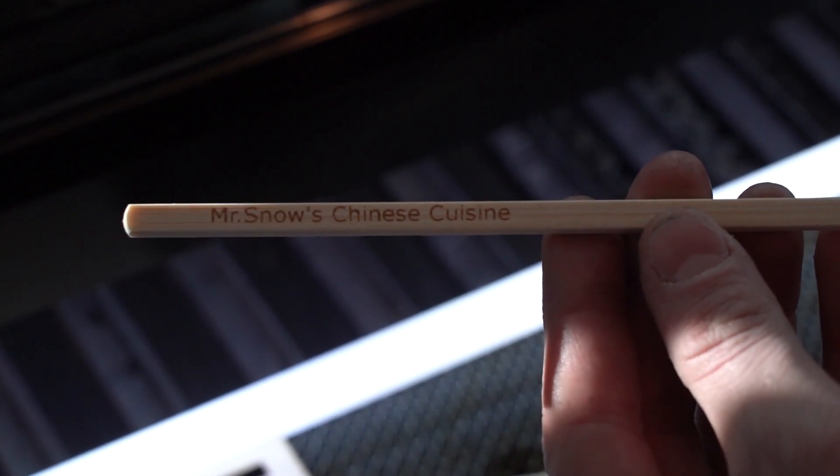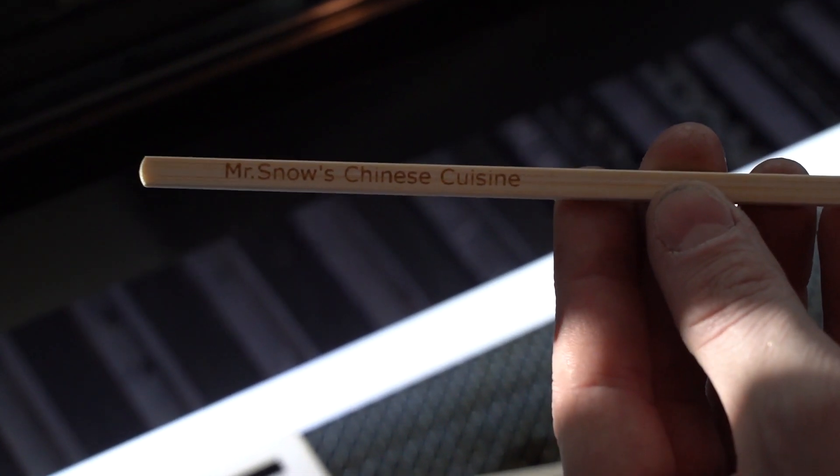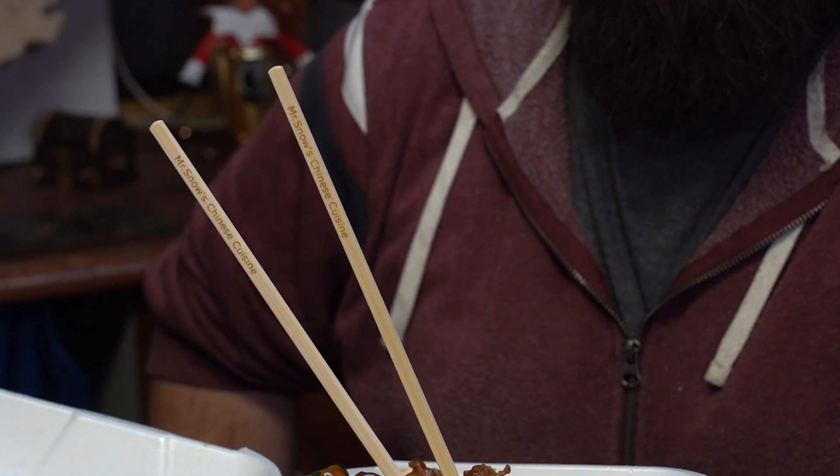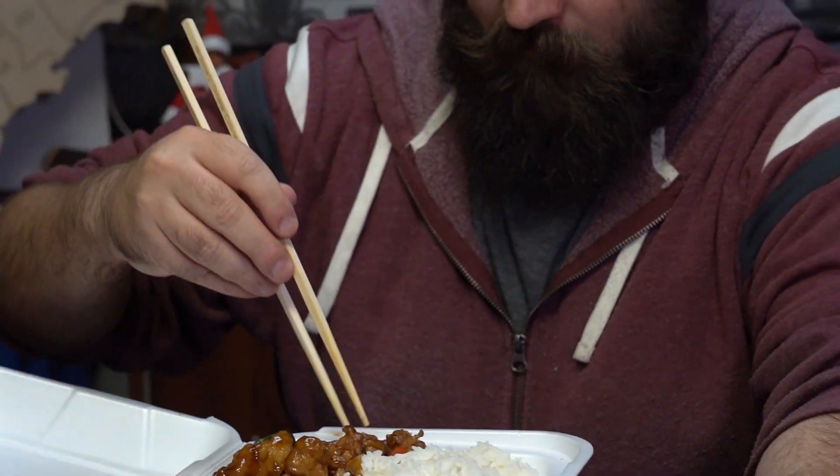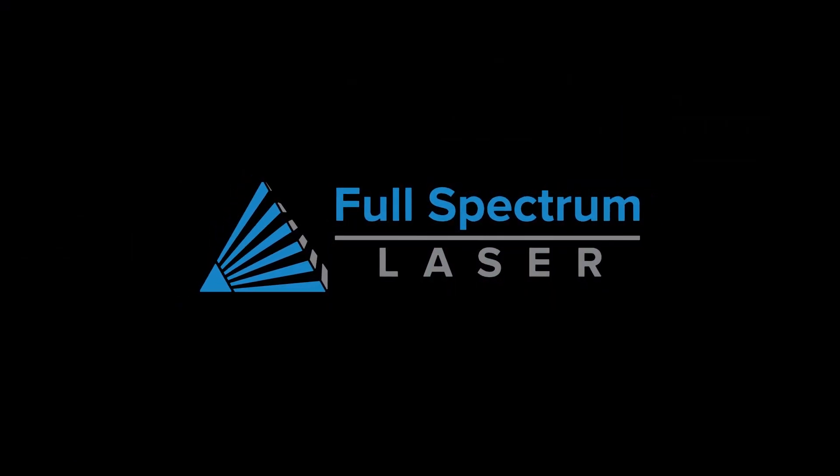Ready for use at Mr. Snow's Chinese cuisine. And there you have it. That's how you engrave pre-existing objects with no problem in a mass production setting. If you have any questions, put them down in the comments section. We'll get to them, share the video, and until next time, keep making.